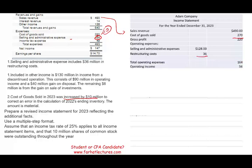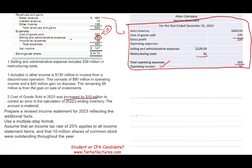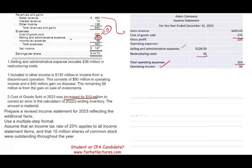Gross profit minus operating expenses gives us operating income, which is a very important number for investors. Operating income represents what the company earns from actually running its business. When you invest in a company, you want to know if they're making money from operations. In this example, the company is clearly making $56 million from operating the business — this is the heart of the business.